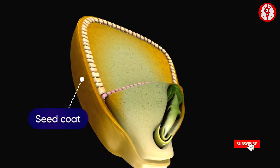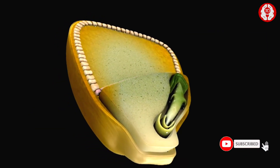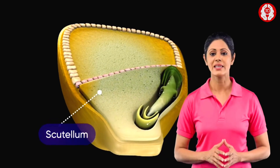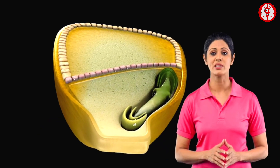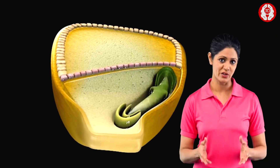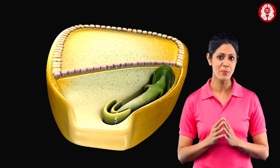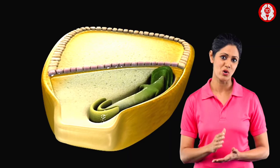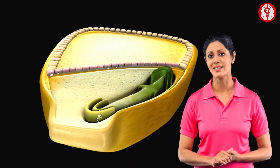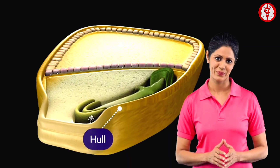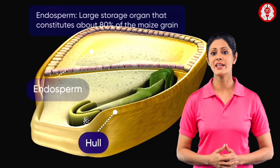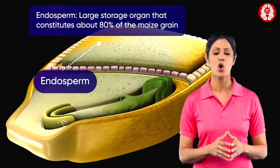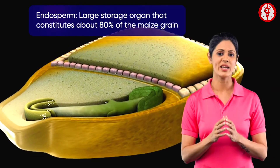The outermost coat enclosing the entire grain is formed by inseparably fused fruit coat and seed coat, and is called the hull. The endosperm occupies about one-third of the total seed.